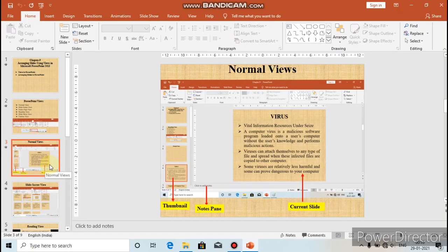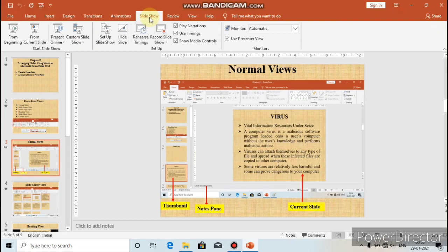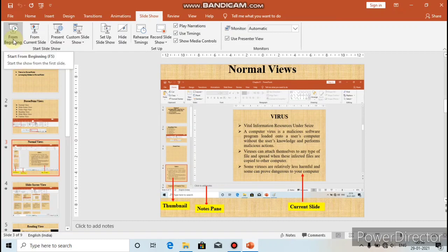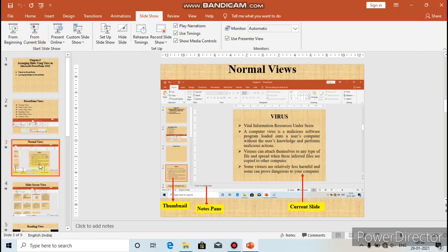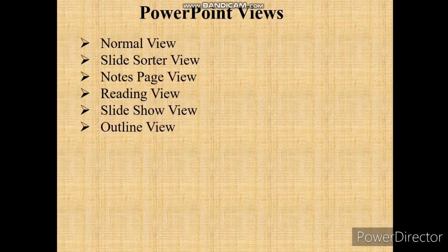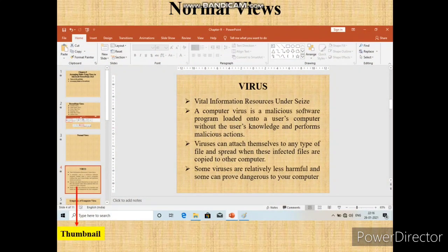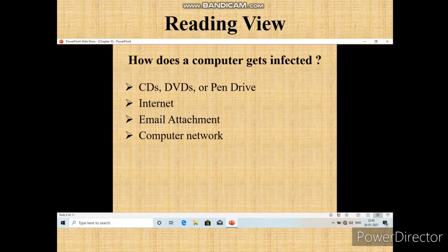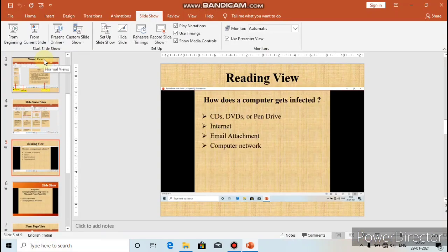The third method is to click on the Slide Show tab and choose from the options in the Start Slide Show group — either From Beginning or From Current Slide. If you choose From Beginning, the slideshow starts from the first slide. If you choose From Current Slide, the slideshow starts from the currently selected slide.